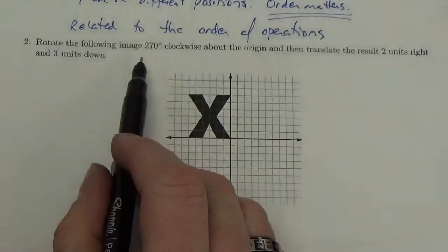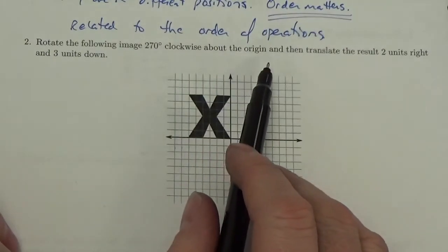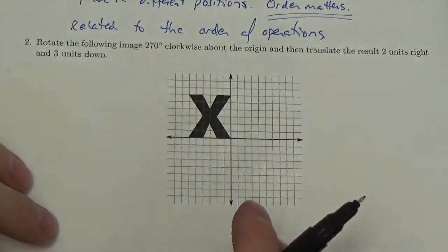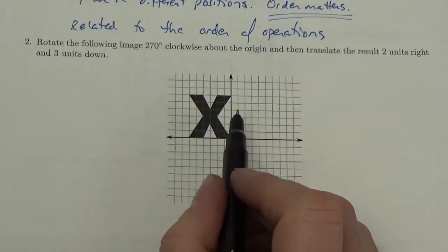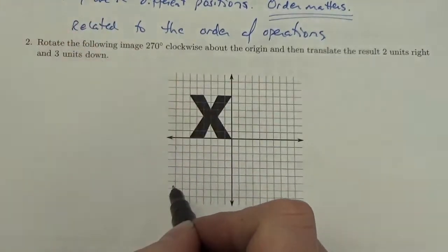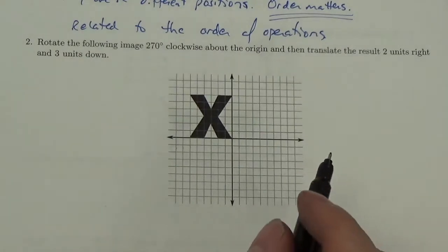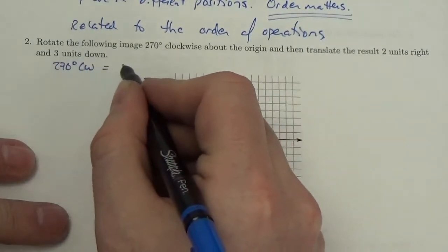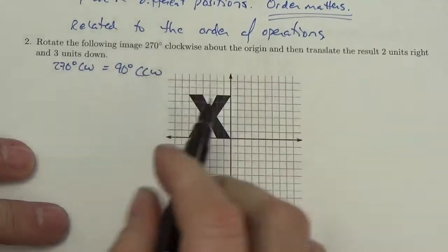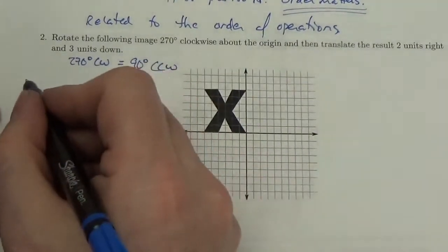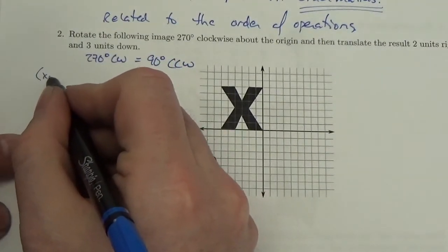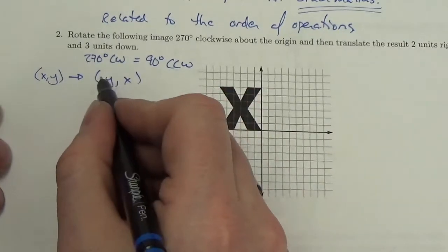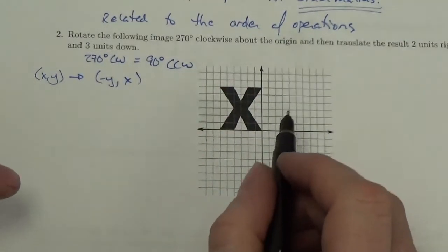For this problem, it says: rotate the following image 270 degrees clockwise about the origin and then translate the result two units to the right and three units down. I've got a little tool for doing rotations. I know that 270 degrees clockwise is the same as 90 degrees counterclockwise. For a 90-degree counterclockwise rotation, I take x comma y, switch the two coordinates to y comma x, and change the sign on the one I bring forward.